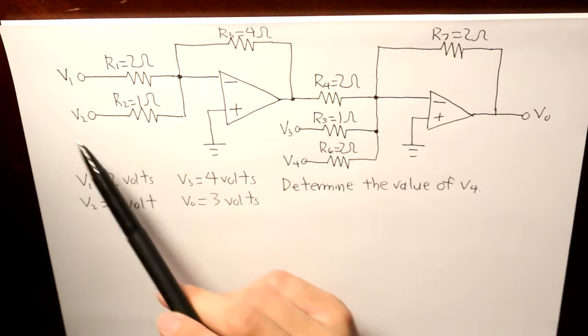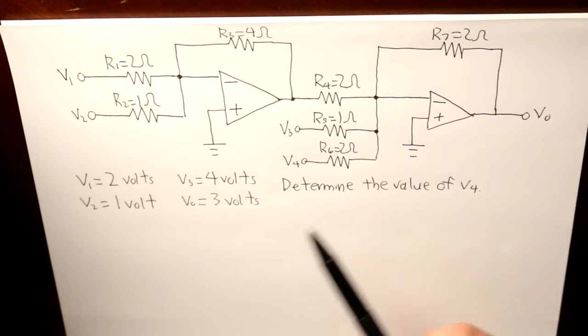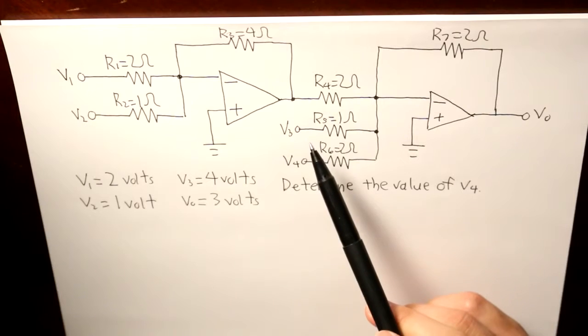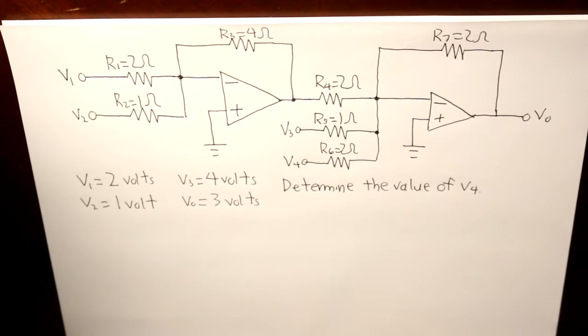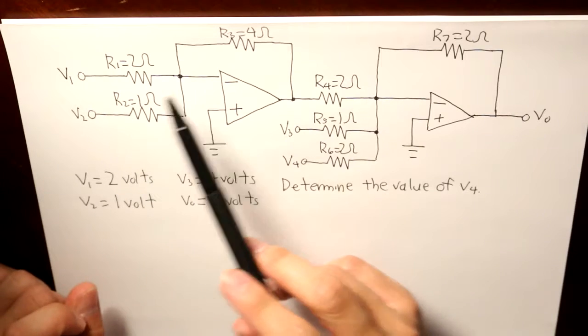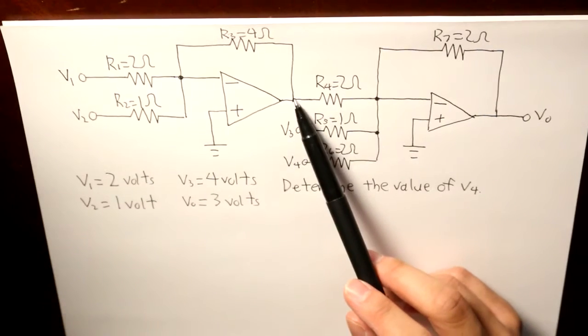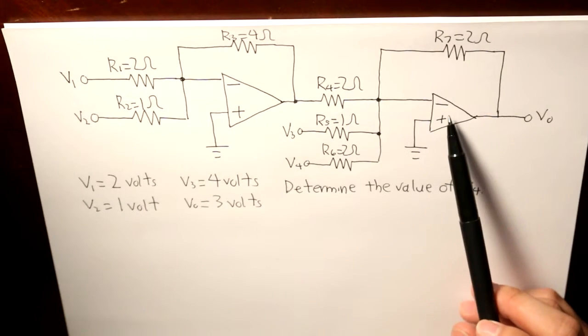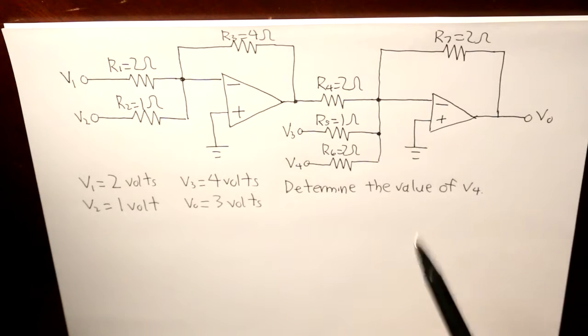We have one op-amp that have two input voltages, and then we have this op-amp that have another two input voltages. But these two input voltages are connected, as you can see, also to our second op-amp.